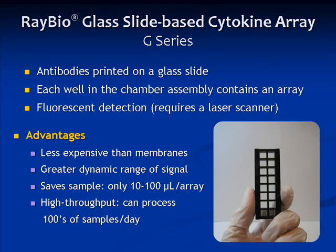The glass slide arrays, or the G-series, contain the same antibodies as the C-series, or membrane-based arrays. The difference is, the antibodies are printed on a glass slide fitted with a chamber assembly. Each well in the chamber assembly contains an array, and a typical slide will have either 4 or 8 arrays printed. The glass slide arrays also feature fluorescent detection, which requires the use of a gene microarray scanner.